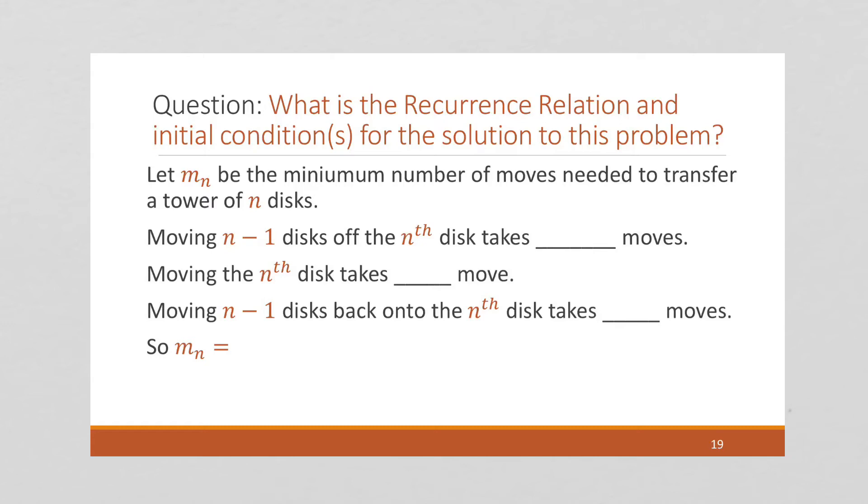Then moving this pile of n minus 1 disks on to pole C on top of that last disk, is going to take m of n minus 1 moves again. So let's work this out. Moving the n minus 1 disks off the nth disk, that very first move, is going to take m of n minus 1 moves. Moving that nth disk onto pole C is going to take one move, and moving the n minus 1 disks from pole B on top of that nth disk on pole C is going to take m of n minus 1 moves.